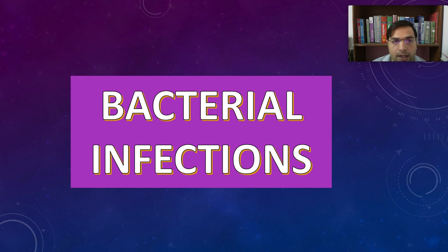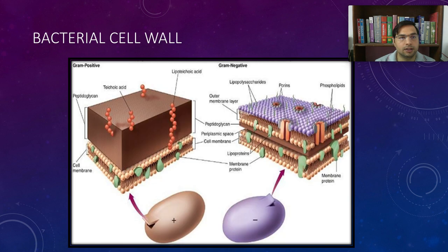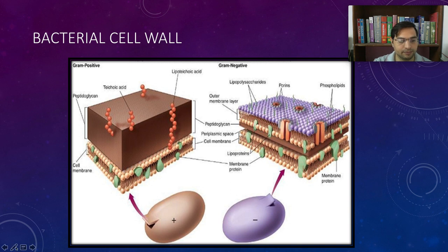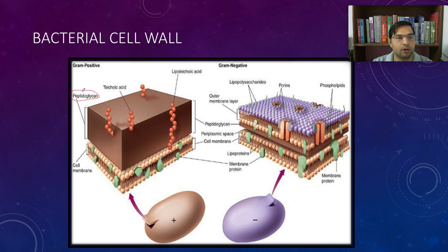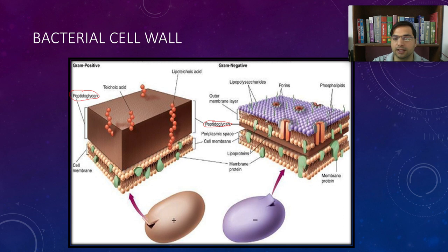As a quick recap: the cell wall of gram positive bacteria is composed of a thick cell wall made up of peptidoglycan. Gram positive contains a thick cell wall, whereas gram negative contains a thin cell wall made up of the same peptidoglycan, but this cell wall is covered by an outer bilipid layer membrane.